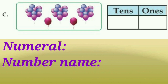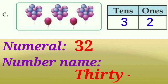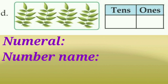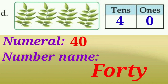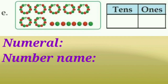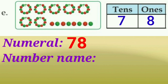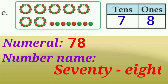And in this picture some balloons are there. How many tens and ones? Three tens, two ones. So the numeral is 32. The number name is T-H-I-R-T-Y T-W-O, thirty-two. And in this picture some leaves are there. Four tens, zero ones. The numeral is 40. The number name is F-O-R-T-Y. And the last picture — some beets are there. Seven tens, eight ones. The numeral is 78. The number name is S-E-V-E-N-T-Y E-I-G-H-T, seventy-eight.